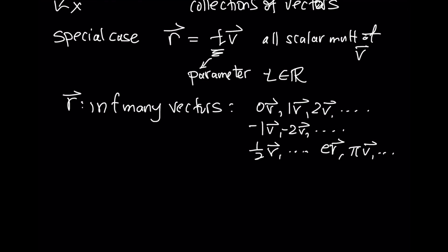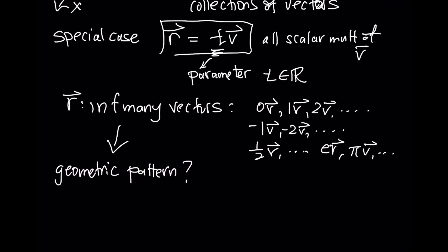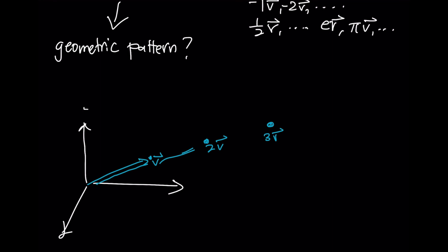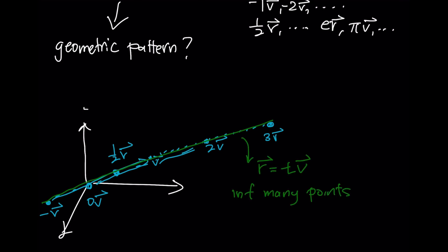What we're interested in is whether there's some geometric pattern with this collection of vectors. Here's the vector V, there's 2V, and here would be 3V. We're interpreting a vector as a single point. Down here would be negative V, this would be 0V, and this would be one half of V. If we started filling in every different multiple of V, they're all parallel to each other. If we take more and more multiples and connect the dots, what we find is that the vectors organize themselves as a line that goes through the origin in the direction of V.